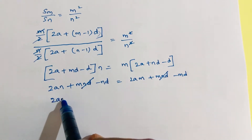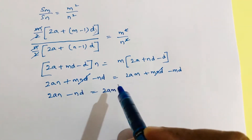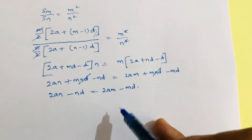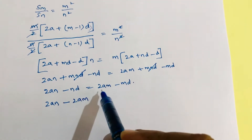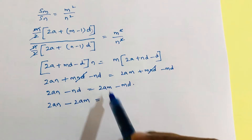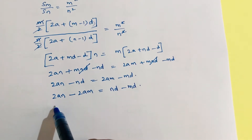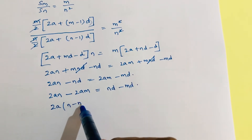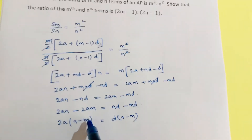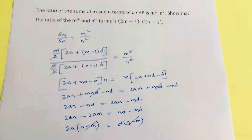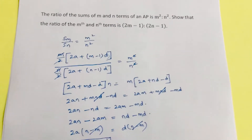So here, bringing 2an minus 2am to one side equals nd minus md on the other side. Taking 2a common: 2a times n minus m equals d times n minus m. The n minus m will get cancelled, so 2a equals d.